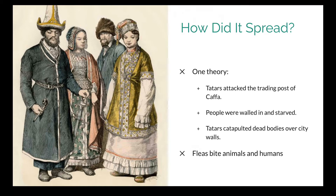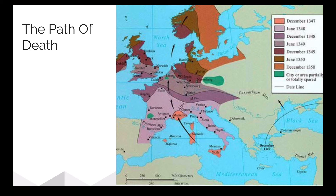When we talk about the Black Death, we're mainly talking about the bubonic plague, though there are two other forms of plague that existed. The bubonic plague kills about 75% of the people infected by it, so it has a really high death rate. It followed the trade routes of the time throughout Europe, hitting Italy first because Italy was the central hub for trade in Europe during this period.